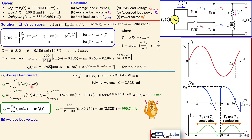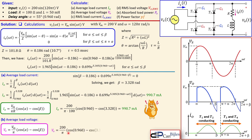The average load voltage (question b) is straightforward using Ohm's law: multiply the average load current by R = 100 ohms, which gives 99.07 volts.